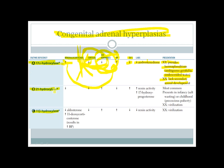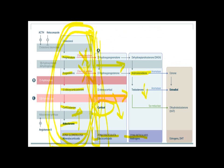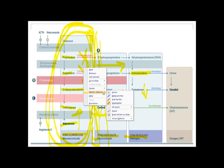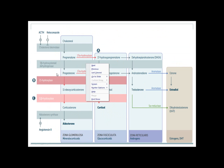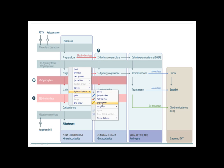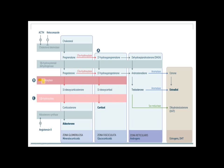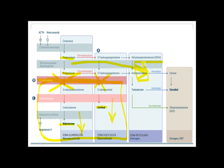Another important deficiency is 21-hydroxylase deficiency. 21-hydroxylase catalyzes later steps in the synthesis of aldosterone and cortisol. With a deficiency, there will not be enough aldosterone or cortisol — this pathway is blocked. Metabolites like progesterone and pregnenolone are shifted to be used as intermediates for androgen synthesis, leading to increased sex hormones.